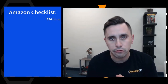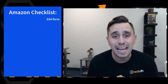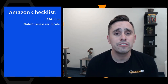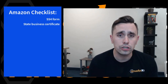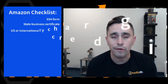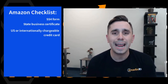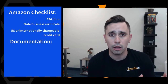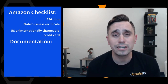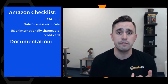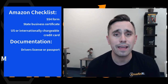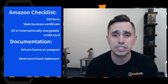You're going to need your SS4 form, which has your IRS EIN number, or you can use your business certificate from your state, which has your business registration number, or if you're in another country, your country's registration number. You're going to need a US credit card or an internationally chargeable credit card. You'll also need documentation uploaded to your computer — like the front and back of a driver's license or your passport — and your most recent bank statement with all your information on it.